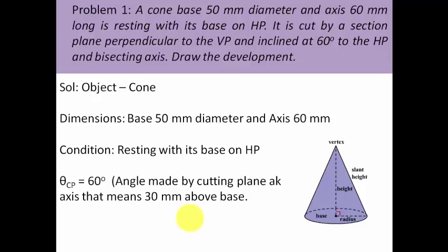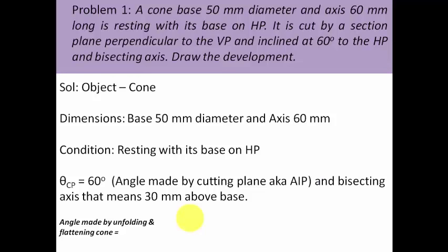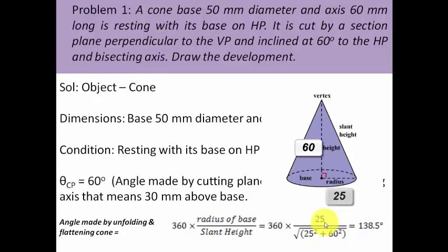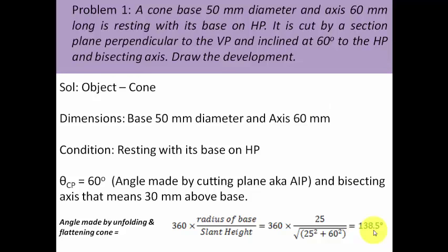Now guys, you need to think about this. If you try to unfold the cone and flatten it up, there is some kind of a pie portion which you're going to see. It resembles that of a pizza, and it is going to make a certain angle. We have this formula for that: 360 multiplied by the radius of base upon slant height. Radius of base is 25, slant height can be calculated by using this Pythagoras formula. On putting the values we get this as our final answer that is 138.5.